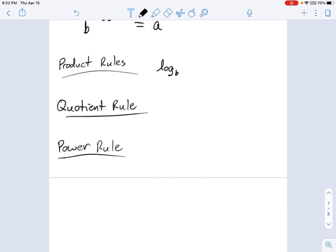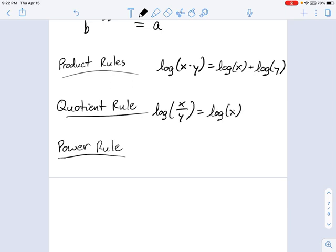If I have the logarithm of x times y, that equals logarithm of x plus logarithm of y. That's the product rule. And the quotient rule is similar to it. If I have the logarithm of x divided by y, that's equal to the logarithm of x minus the logarithm of y.